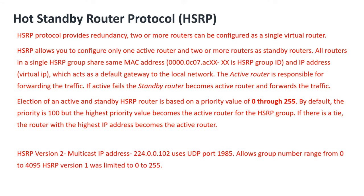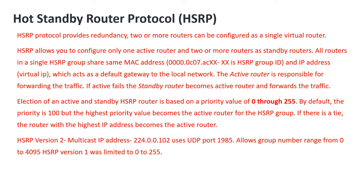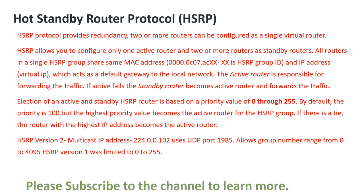HSRP version 2 uses multicast IP address 224.0.0.102 and UDP port 1985. It allows group numbers ranging from 0 to 4095, whereas HSRP version 1 was limited to 0 to 255.